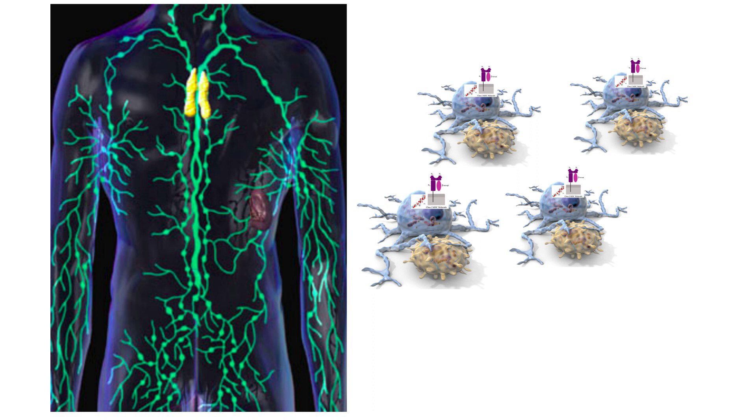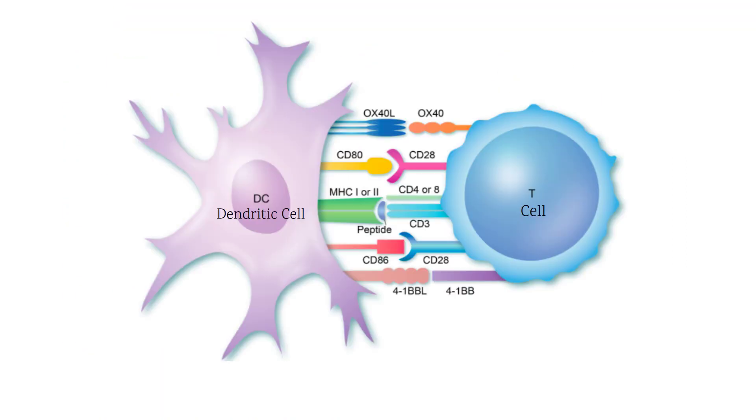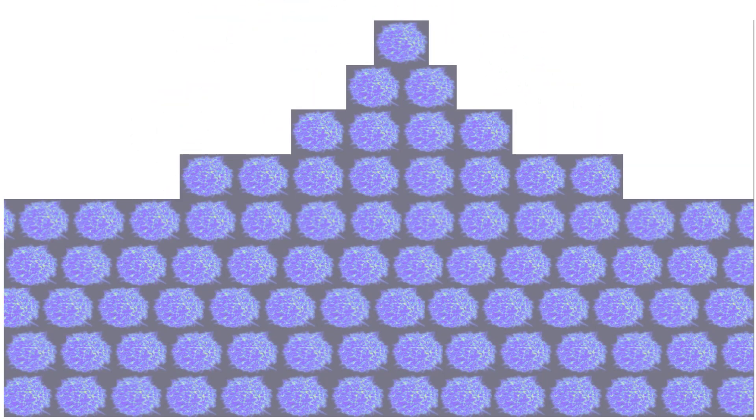In the lymph nodes, if the sensors on these naive T cells recognize this unique peptide-MHC combination on this dendritic cell, naive T cells get activated. Once activated, the naive T cell clones itself into millions and differentiates into helper T cell and cytotoxic T cell.